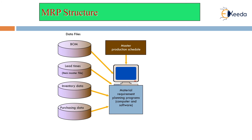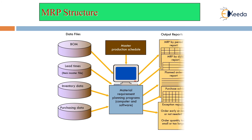The MRP structure is dependent upon the inputs given to the system, which produces outputs including MRP by period, MRP by date, and planned order reports covering purchase advice and exception reports — such as orders that are early, late, or not needed today, and order quantities that are too small or too large.